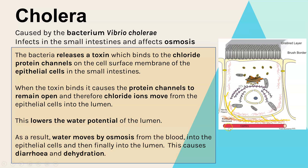The movement of chloride ions into the lumen lowers the water potential of the lumen. Therefore water from the capillaries moves by osmosis into the epithelial cells and then from the epithelial cells into the lumen. This means there is lots of water in the lumen, so someone with cholera ends up with diarrhea because there's lots of water within their feces. That water has also come from the blood and from the cells, resulting in severe dehydration.